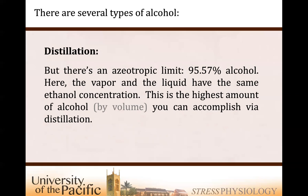There's a zeotrope — a liquid and a vapor that have the same composition. An azeotropic limit means no matter how much more distillation you attempt, the composition isn't changing; the vapor has the same composition as the fluid it's emigrating from. For alcohol via distillation, the highest alcohol percent you can possibly get is 95.57%. You cannot get 95.58% through distillation — at that point the vapor and the fluid have the exact same ethanol composition.